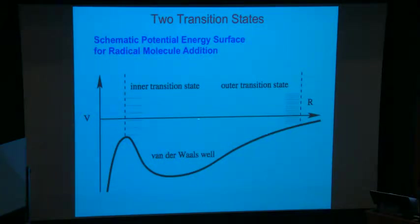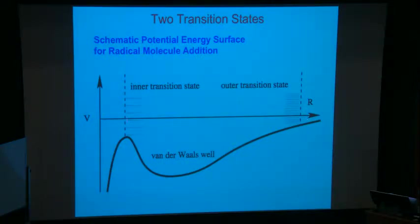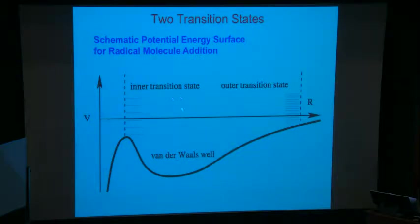But if the barrier is below the asymptotic energy — what we call a submerged barrier — then at the limit of zero temperature, the transition state corresponding to forming the van der Waals complex will be the dominant one. You've got some states already at your zero energy out at large separation, and you'll have no states for the inner transition state, so you need a variational treatment for the low temperature regime. At high temperatures the vibrational level spacing is much wider in the inner region than it is at long range, so the outer transition state has more states. Any kind of addition, abstraction, or reaction has this two-transition-state picture, and you have to account for both.